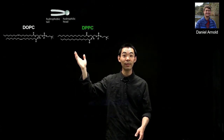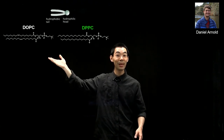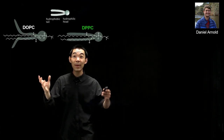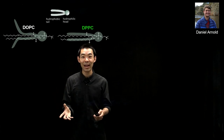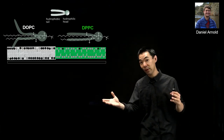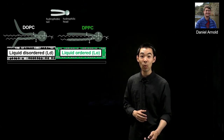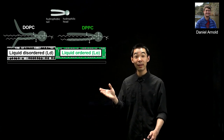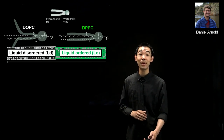The first lipid is DOPC, and the second is DPPC. The only difference between these two lipids is that DOPC has a double bond along its acyl tail, giving it a small kink. When you mix these two lipid types together, due to steric interactions, they macroscopically phase separate into two domains: a liquid disordered phase (LD), enriched in DOPC, and a liquid ordered phase (LO), enriched in DPPC.